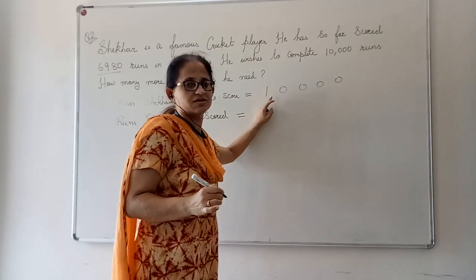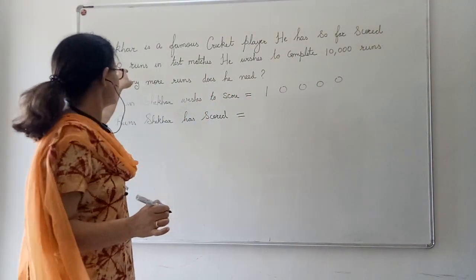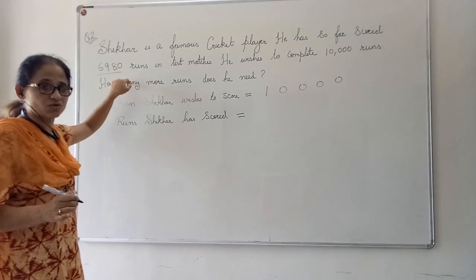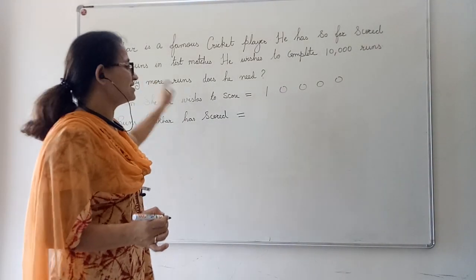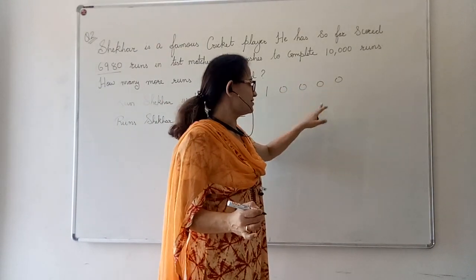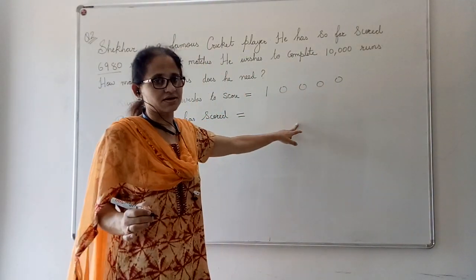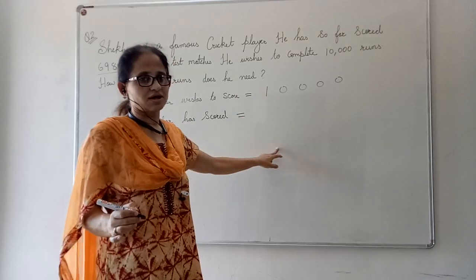Here, 10,000 is a 5-digit number whereas 6,980 is a 4-digit number. We all know when we subtract, 1's should come under 1's, 10's under 10's, 100's under 100's, 1000's under 1000's.